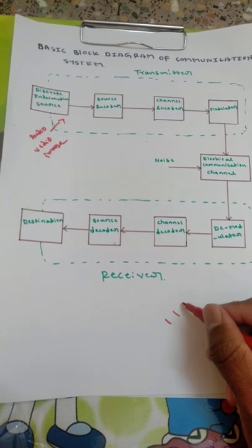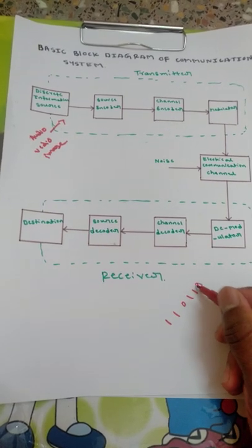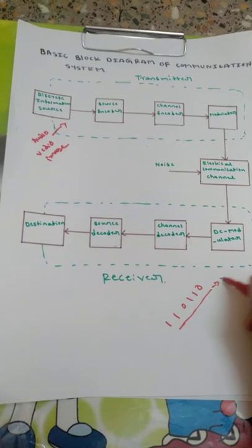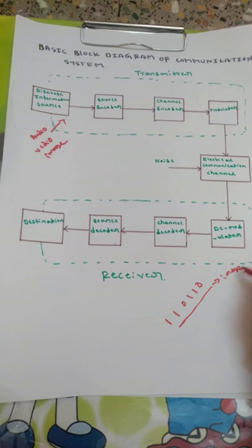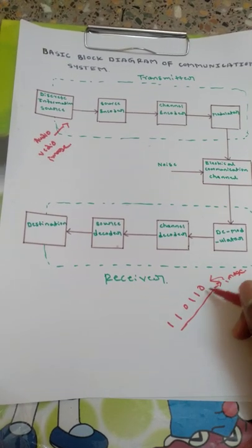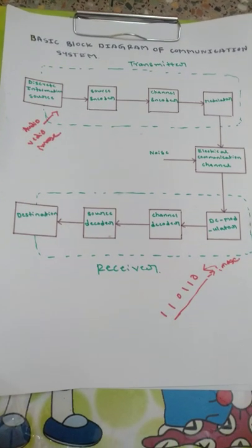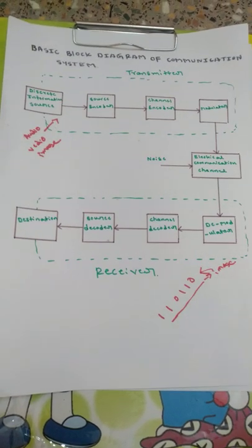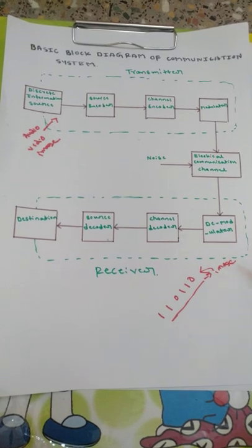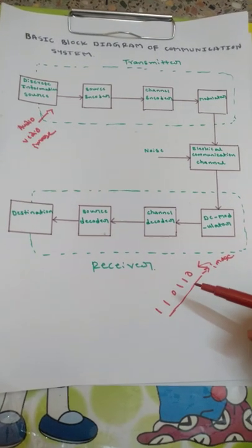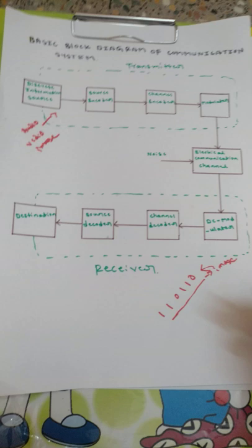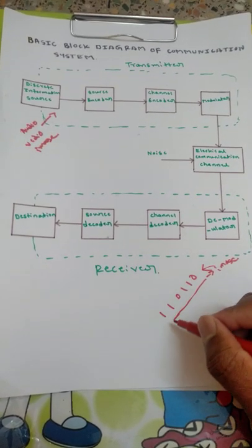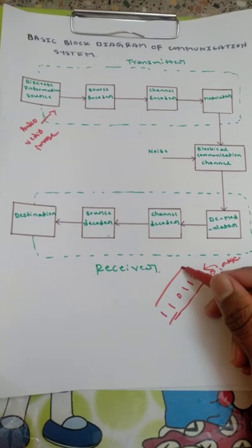The source encoder takes the data produced and converts it into a digital signal — for example, 1 1 0 1 0 0. Suppose we are sending some image; that image is converted to digital form because computers understand only digital data. That's why everything is converted to 1s and 0s.